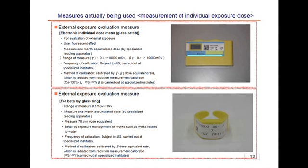Lastly, we would like to introduce a unique measurer, the glass patch. APD measures exposure doses every day. However, when we want to measure an accumulated dose for a one-month period, this glass patch is used for continual measurements. By using the scintillation effect and its reader, it shows the accumulated dose. An external institute is also calibrating this device. The device below shows another special dose meter, a glass ring for beta rays.